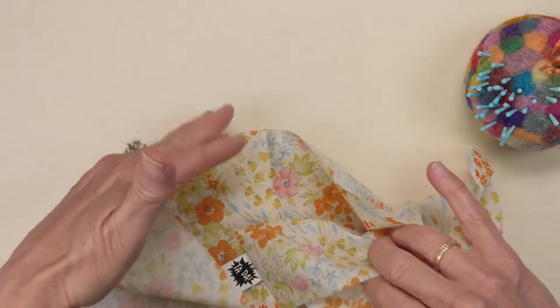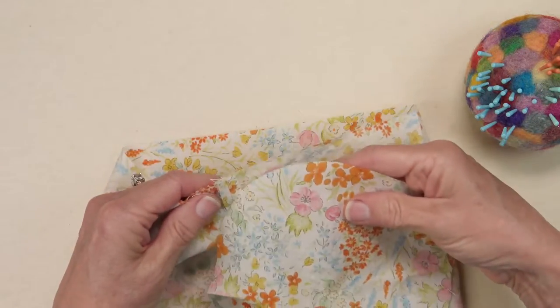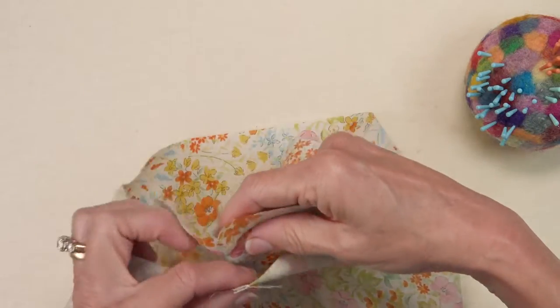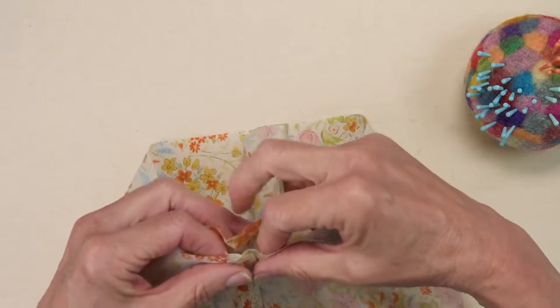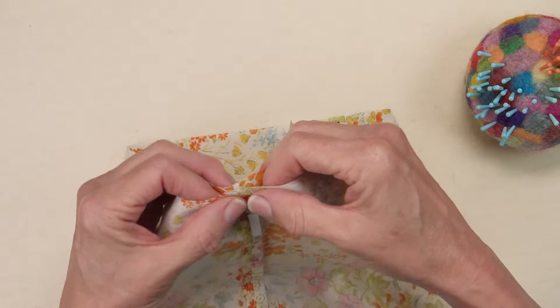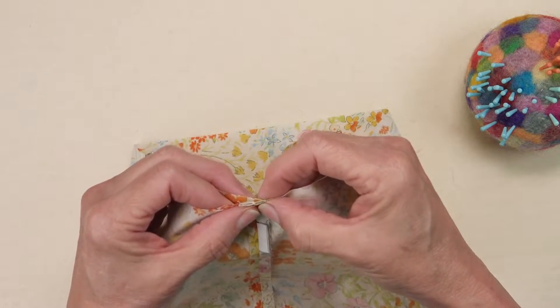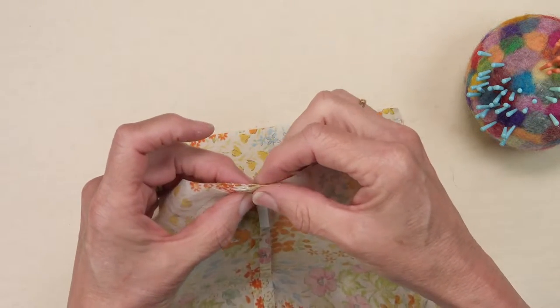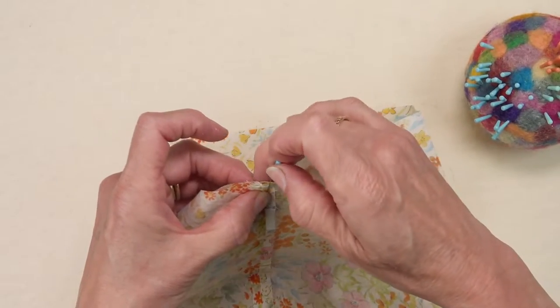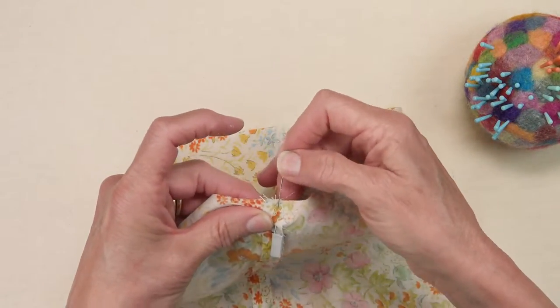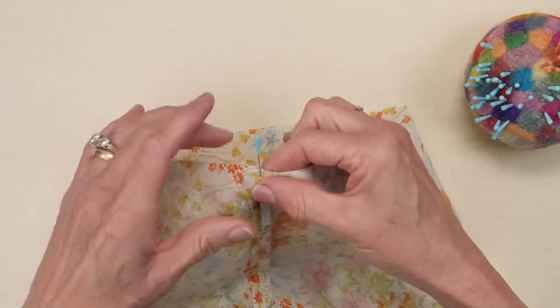With the bag folded right sides in take the bottom and match one of the pressed in creases of the bottom with the seam line at the bottom of the bag.